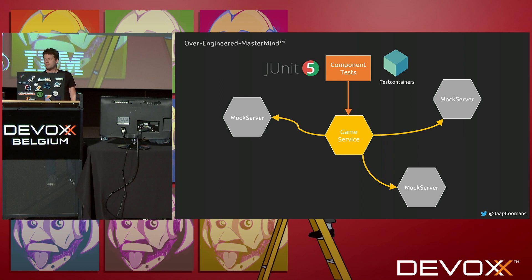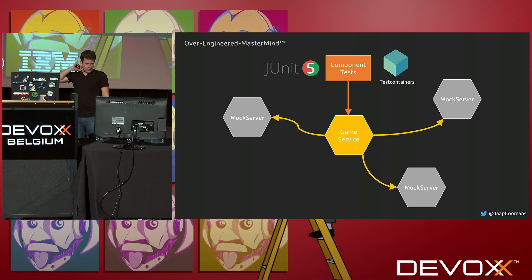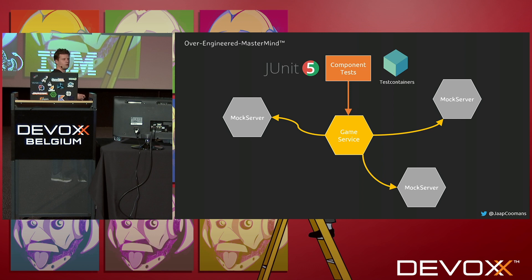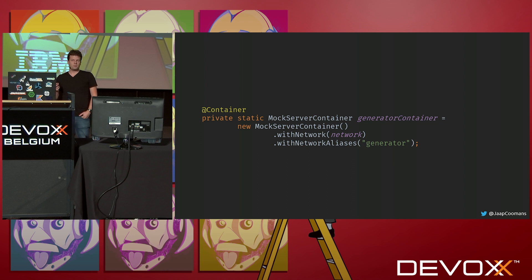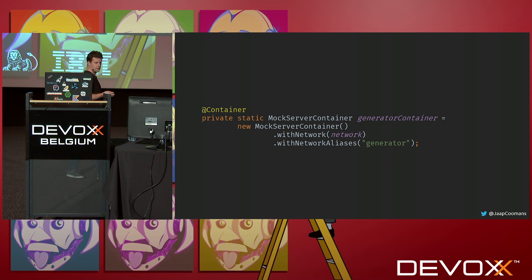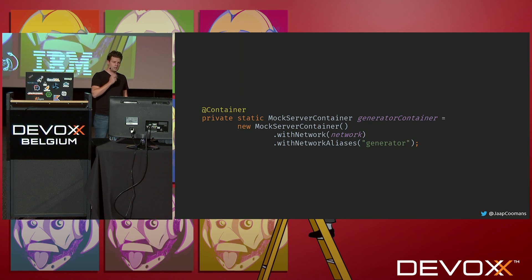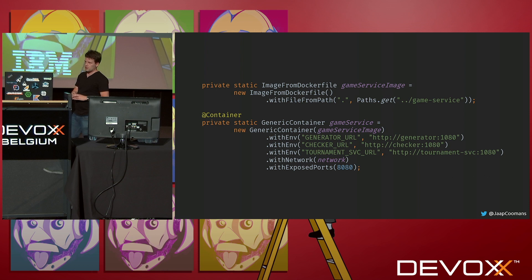This is my test setup. I'm using JUnit 5 and TestContainers for orchestration. I actually built the game service; the rest I was both too lazy to build and I'm trying to make a point, so I didn't build the other services. First, I'm setting up a MockServer container — there's a native integration for that with TestContainers, so if you're into TestContainers you're in good shape. It says: use my local network and give it an alias 'generator.' I do that three times for the three different dependencies.